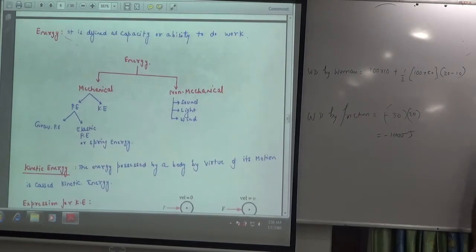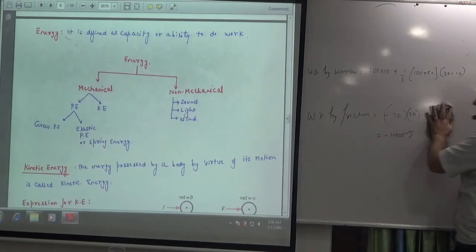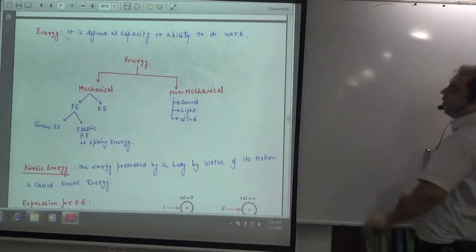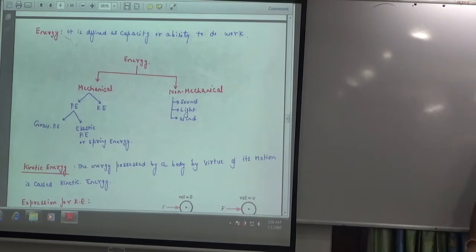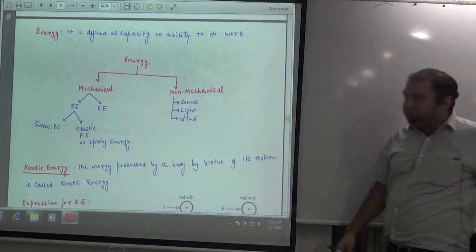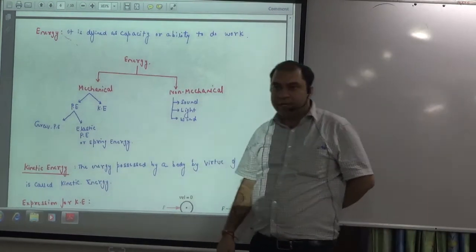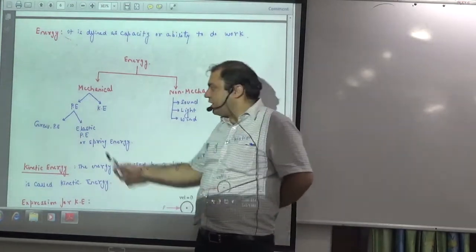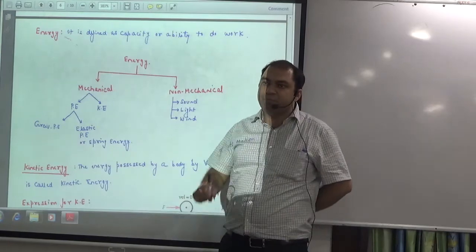Then what did we do? Energy. Energy is the capacity of doing work. And energy was given two types: mechanical and non-mechanical. Mechanical energy has two types: potential and kinetic. And potential energy has two types: gravitational potential energy and elastic potential energy or spring energy.